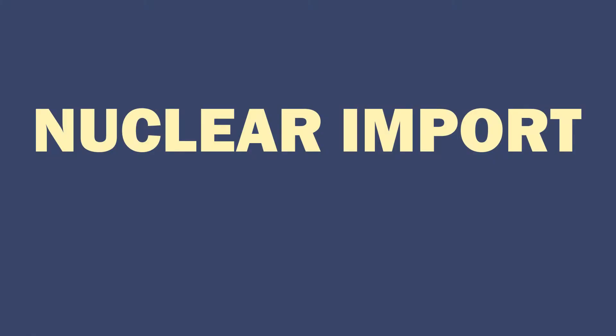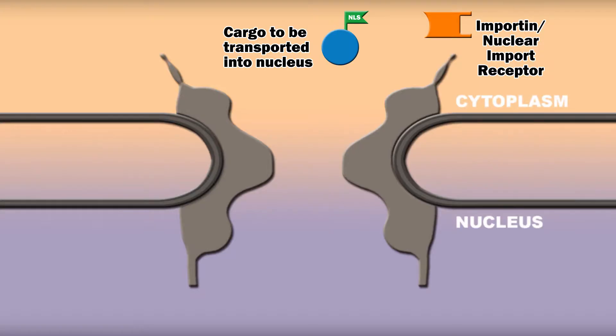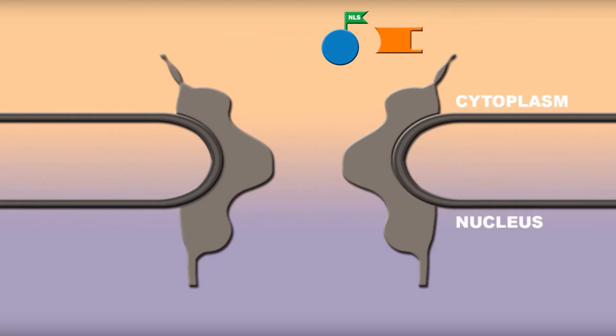Now, let's take a look at how nuclear import works. A macromolecule has a nuclear localization signal and is hence destined to be transported into the nucleus. It binds to an importin, and the bound importin binds to nucleoporins of the nuclear pore complex.